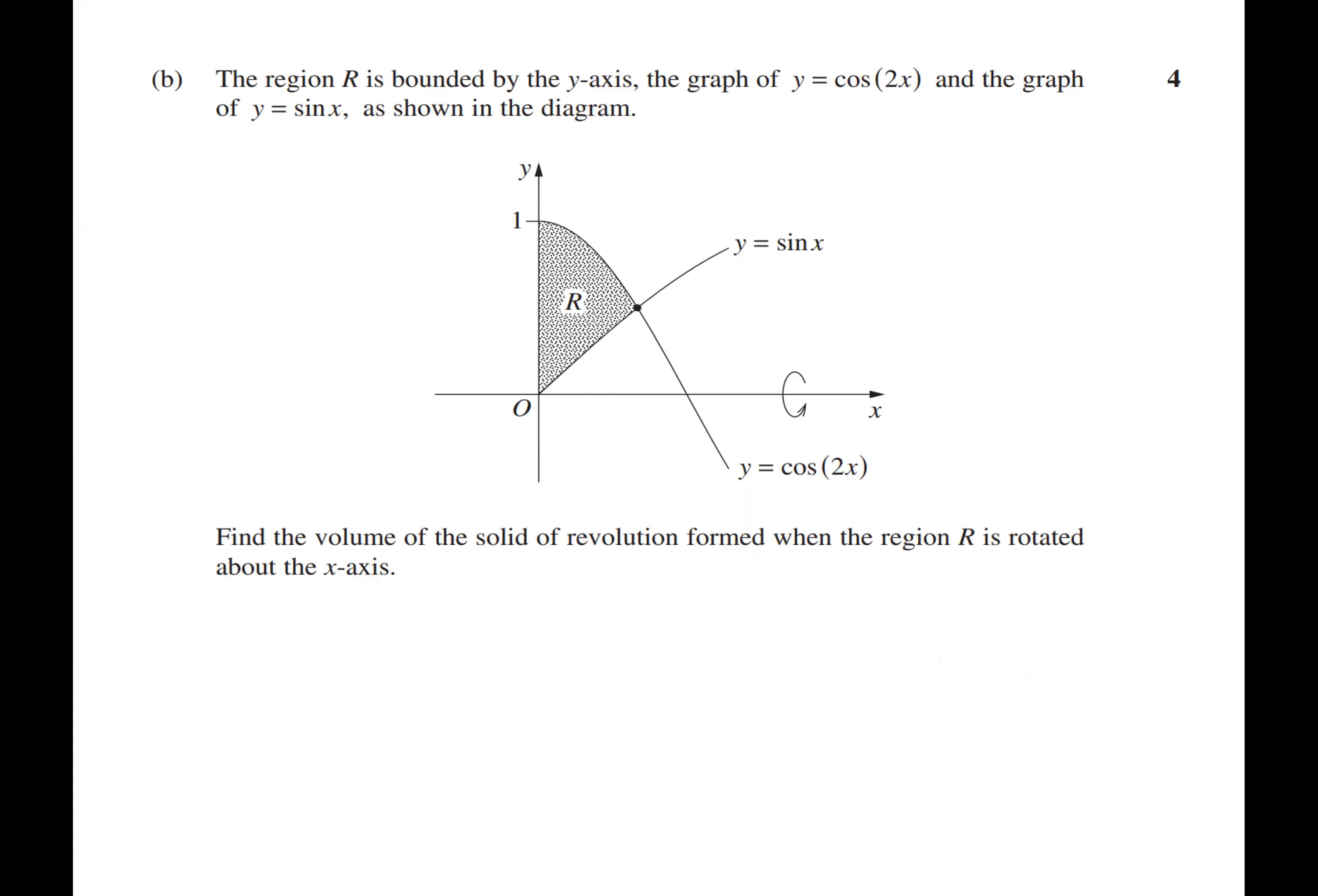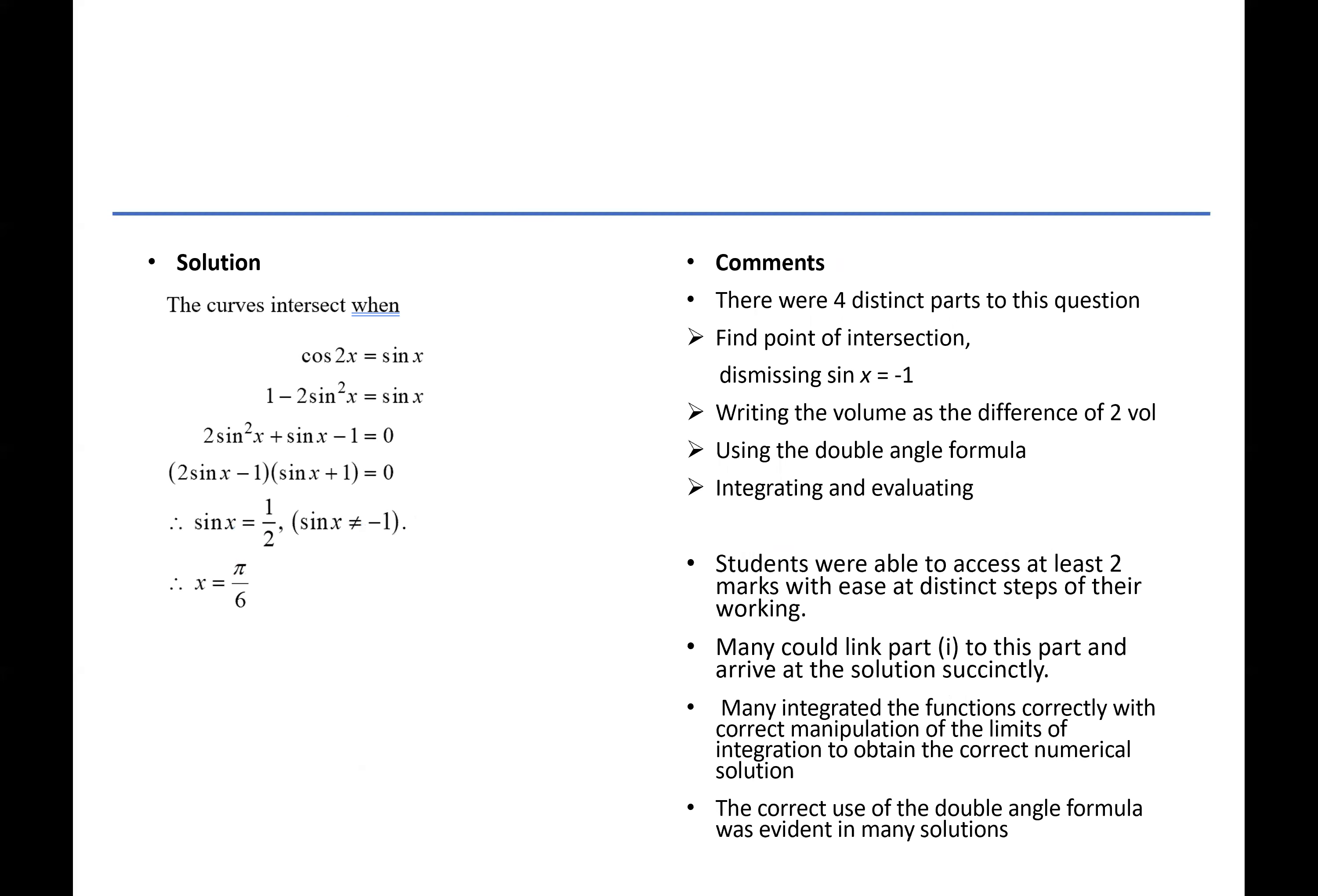Part B involved the solids of revolution. Now here for four marks there were four very distinct parts to this question. They had to find the point of intersection dismissing sin x cannot equal minus one because the region given was in quadrant one. Then they had to write the volume as the difference of two volumes. Then they had to use the double angle formula and in particular apply it to cos 2x. And of course the last part was integrating and evaluating.